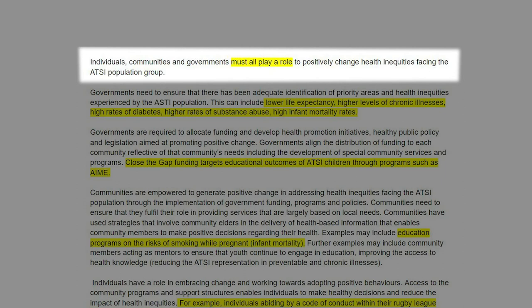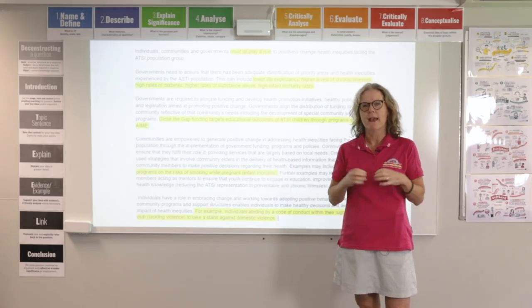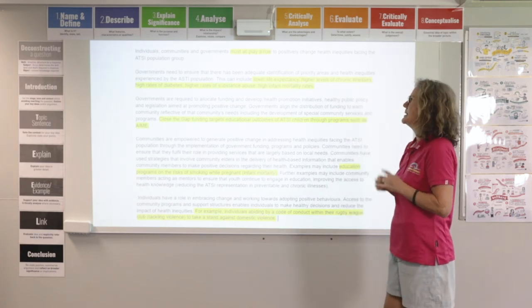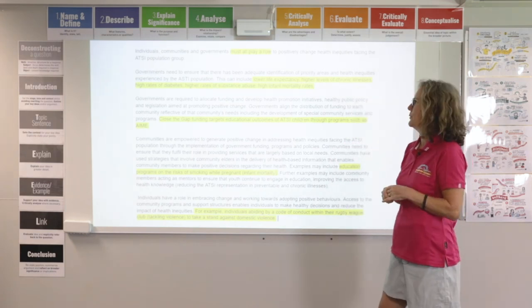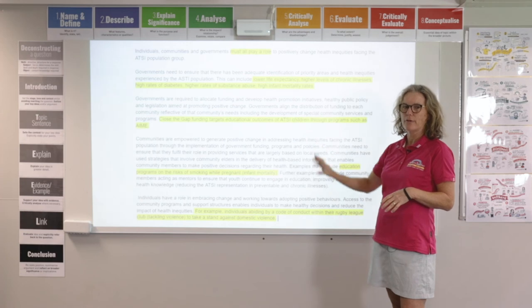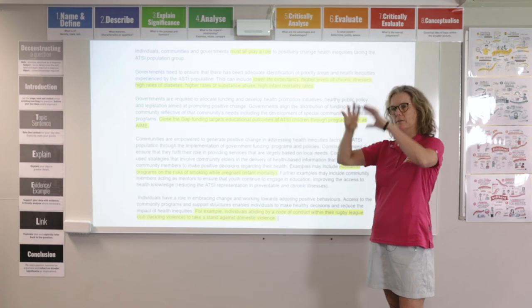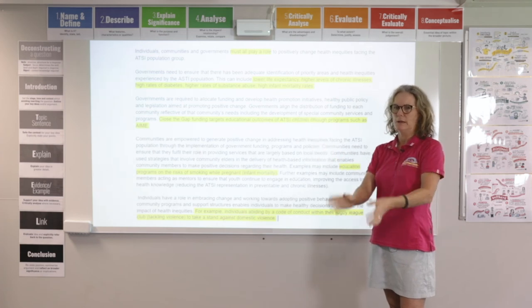What's your feeling about this topic? Here the sample highlights that individuals, communities and governments must play a role to positively change the health inequities — so they're saying something. Feel a bit passionate about what you're saying and set your essay up for being a really good response. The introduction is about the actual health inequities that Aboriginal and Torres Strait Islander people face. You might start with that and then move into one paragraph on each of the roles — in this one they've started with governments, which is not a bad way to start: big umbrella, then moving down to communities and then individuals.